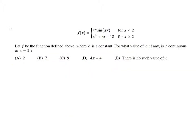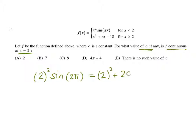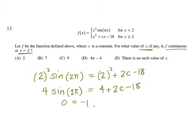Finally, for number 15, we're looking for the value of c so that the function is continuous at x equals 2. We substitute 2 into both pieces and set them equal: 4 sine of 2π equals 4 plus 2c minus 18. Since sine of 2π equals 0, this gives 0 equals negative 14 plus 2c, so c equals 7. That's answer choice B.